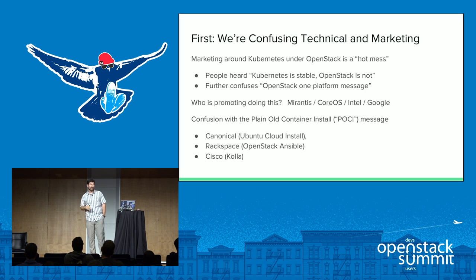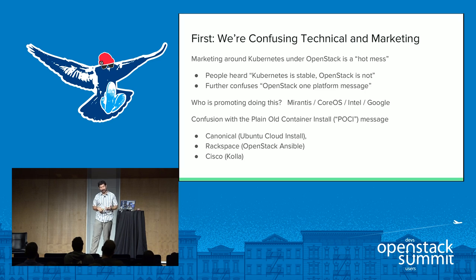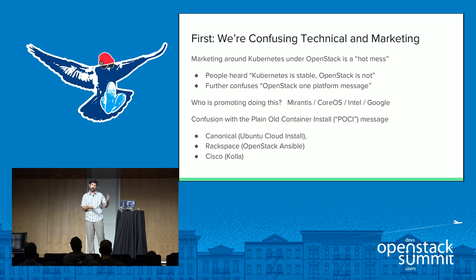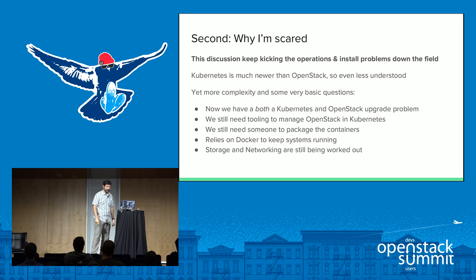We add in confusion with what I'm trademarking as 'plain old container installs' — POCIs. Canonical, Rackspace, and Cisco have projects spun up around doing container installs, which are not Kubernetes installs. The Kolla stuff people are reusing Docker containers for ignores where most of the effort seems to go for Kolla, which is in Ansible scripts. It's very convoluted and confusing, and it's easy to say OpenStack is doing all this container install stuff — that just translates into Kubernetes.